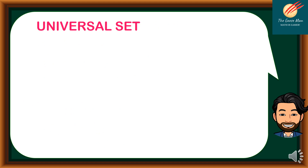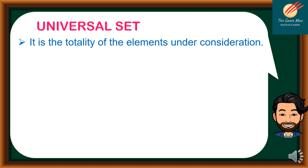Another example is set D = {X | X is a primary color}. Let's move on to another term: universal set. It is the totality of the elements under consideration, and it is usually denoted by the capital U.